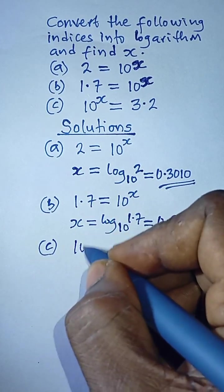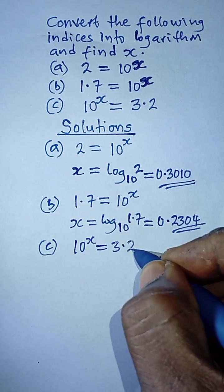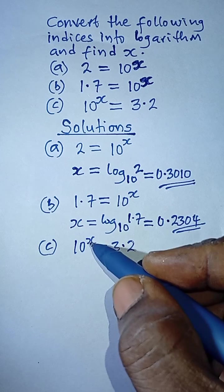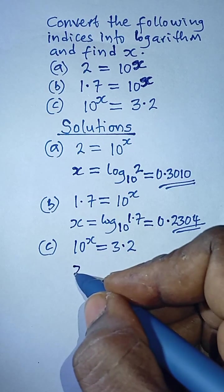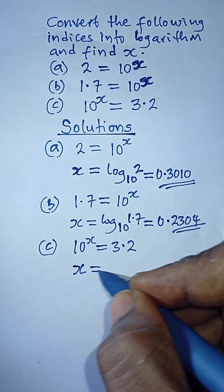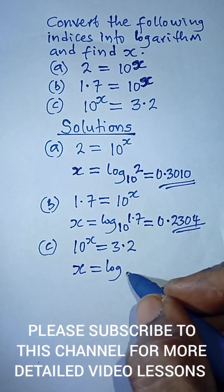And then the last one here, it says 10 raised to power x is equal to 3.2. So as usual, the value x here, which is the power—don't forget logarithm is the power—so x is equal to the logarithm to the base 10 that we still have here.